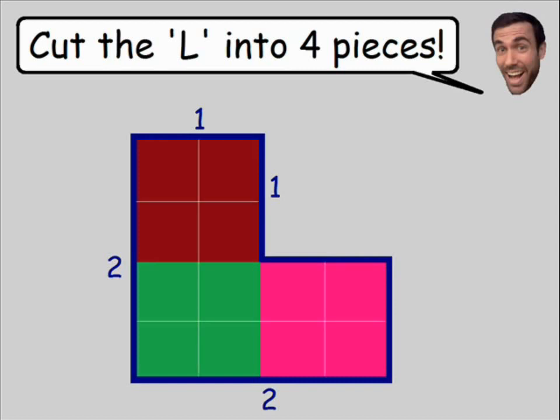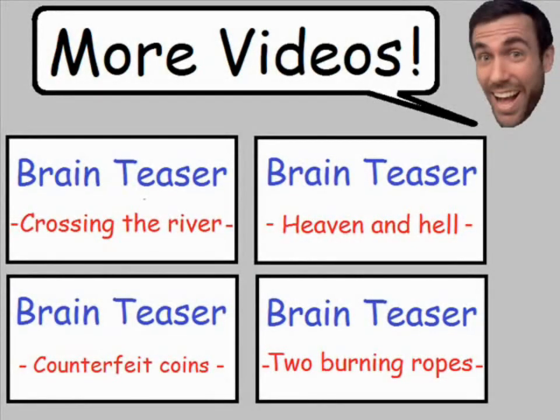Now notice what happens if we cut an L shape which is made up of three quarters of the colored squares. Notice how there's one quarter taken away from each colored square. Now if we color this area in blue, notice how we have four L shapes and they are all four exactly the same size. So we have officially solved this brain teaser.